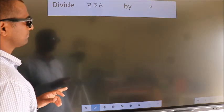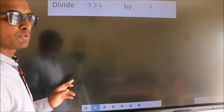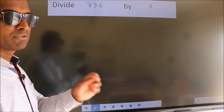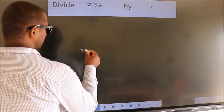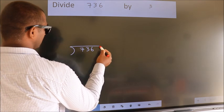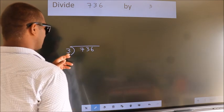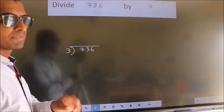Divide 736 by 3. To do this division we should frame it in this way. 736 here, 3 here. This is your step 1.